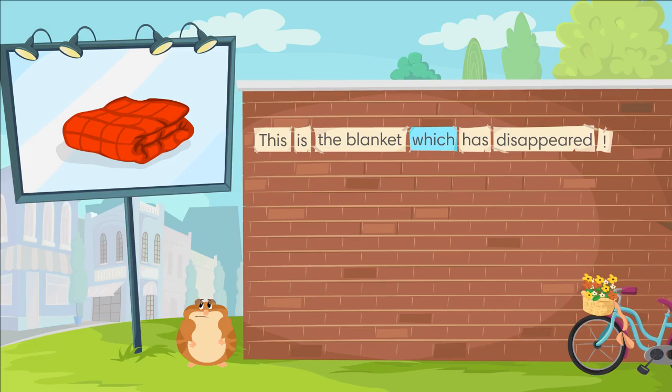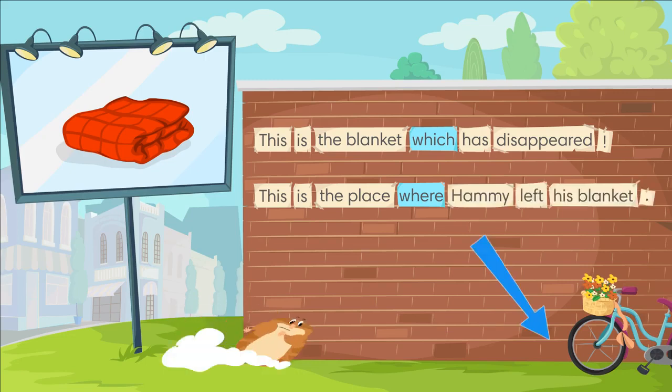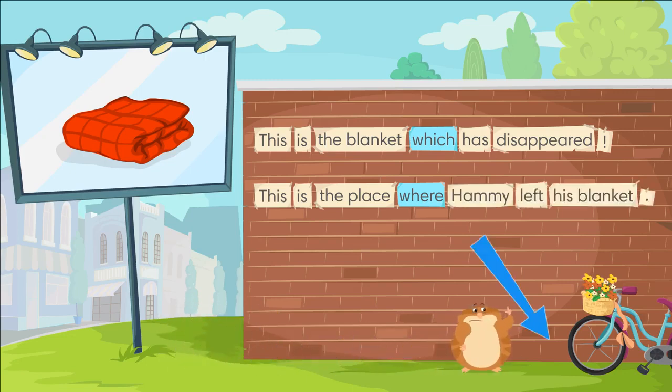This is the blanket which has disappeared. This is the place where Hammy left his blanket.